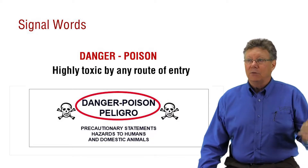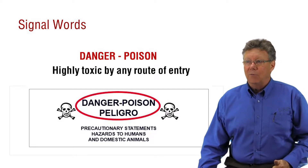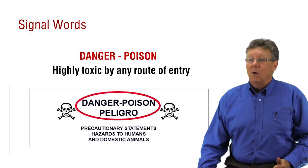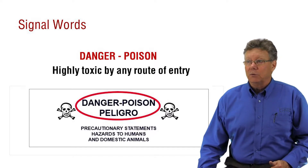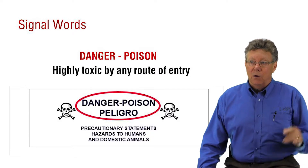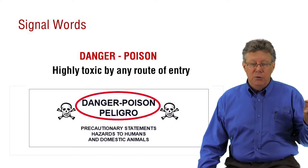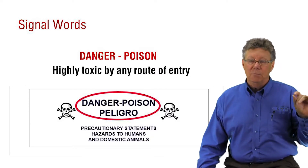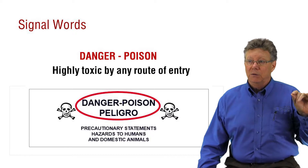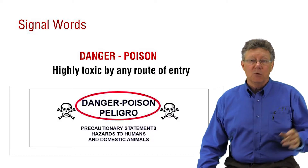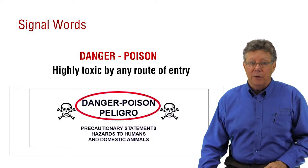The LD50 values of a pesticide with the signal word danger, poison, peligro with the skull and crossbones would be very small. It only takes minute amounts — 0 to 50 milligrams per kilogram — to kill 50% of the laboratory test population.